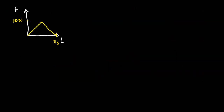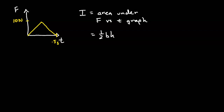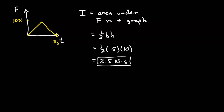Now let's look at a problem where we can use the graphical method to find the impulse. The impulse is equal to the area under the force-versus-time graph. In this case, that area is inside a triangle. So we can use one-half base times height: one-half times 0.5 times 10, which gives us 2.5 newton seconds. If it's a triangle, use the area of a triangle equation; if it's a rectangle, use the area of a rectangle equation.